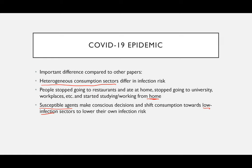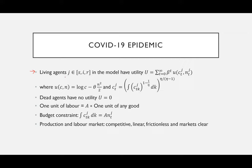The model is written such that living agents belonging to either the susceptible, infected, or recovered population have a utility of this form: the summation of beta raised to t, times u(c_j_t, n_t). The utility function is basically log consumption minus theta times quadratic labor, so n-squared over two. We can think of c_j_t as an integral of consumption: c_j_t equals the integral of c(k) raised to one minus one-over-eta dk, the whole raised to eta over eta-minus-one, where eta is the elasticity of substitution.